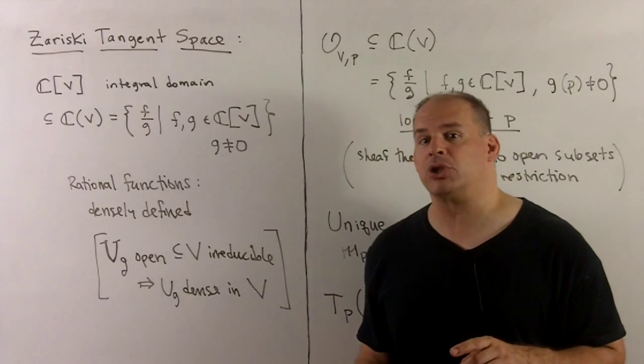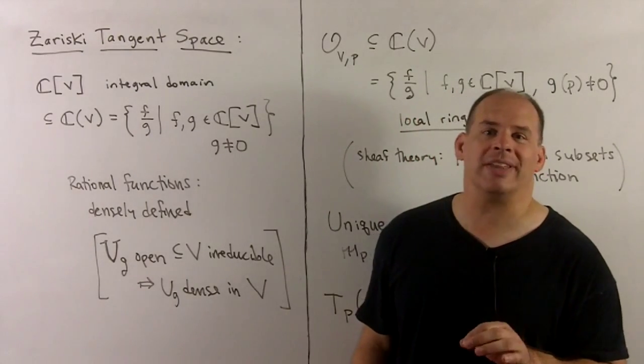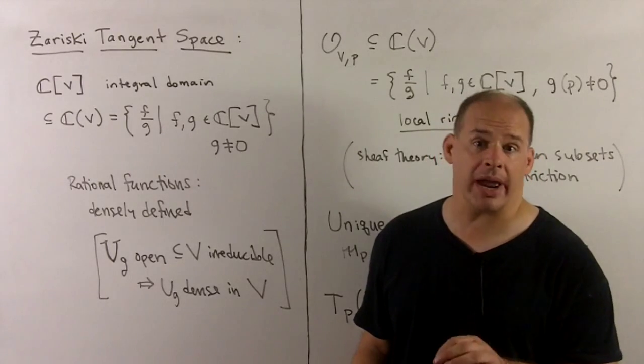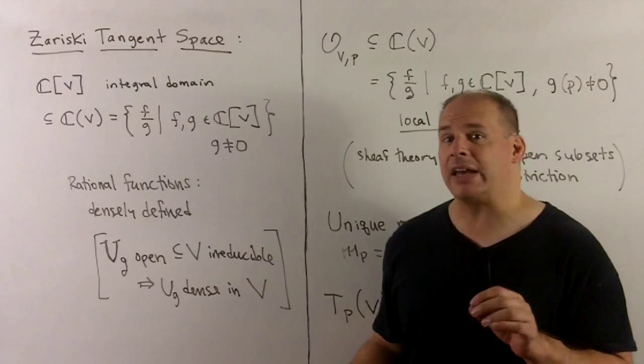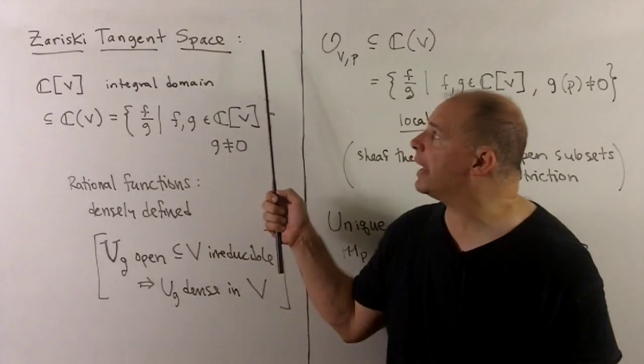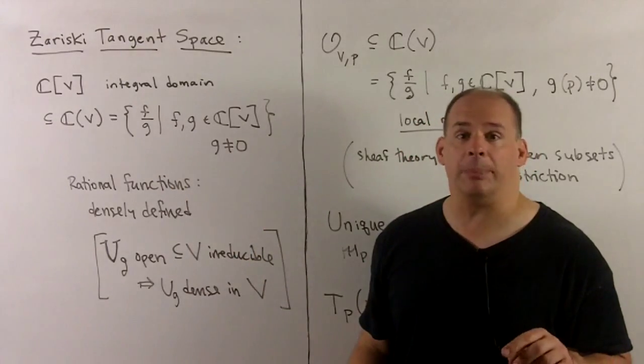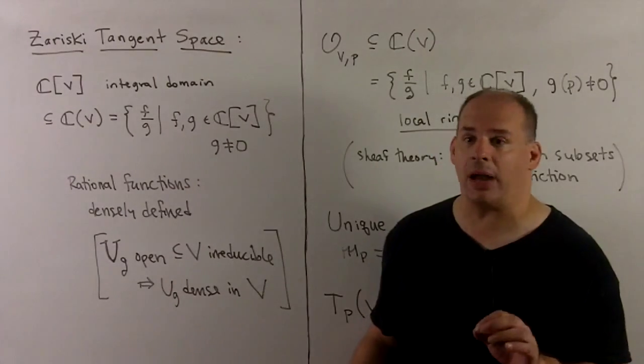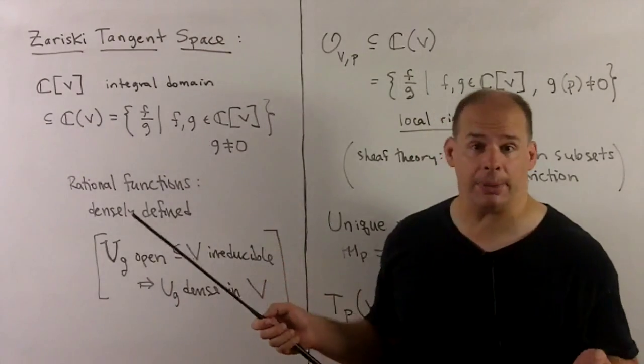If we want to do algebraic geometry in general, we want machinery that doesn't depend on special properties of the complex numbers other than algebraic closure. That'll lead us to the definition of Zariski tangent space, defined purely using algebra.